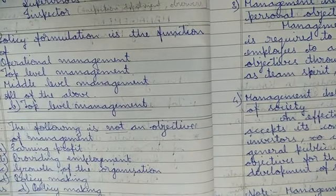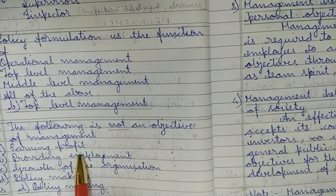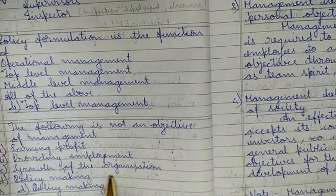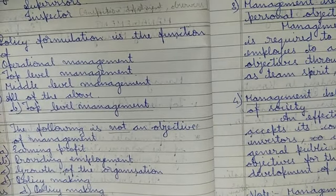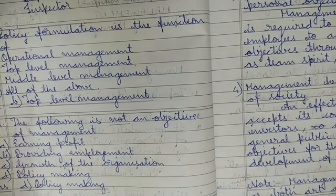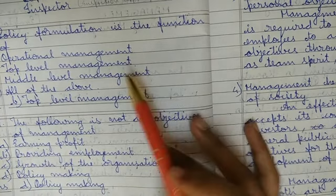Another MCQ: 'Which of the following is not an objective of management?' — options are earning profit, providing employment, growth of the organization, and policy making. The answer is policy making, because the objectives of management include organizational objectives like profit, social objectives like providing employment, and organizational growth — but policy making is done by top level management, not listed as an objective.